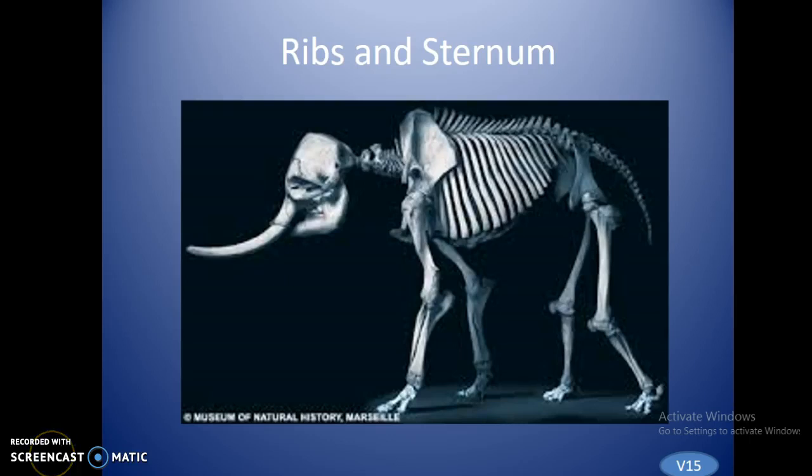Welcome to the ribs and sternum PowerPoint. What we have here is an elephant, as you probably could have guessed. It has a significant amount of ribs to protect the internal organs. We'll go over the differences by the end of the last slide.